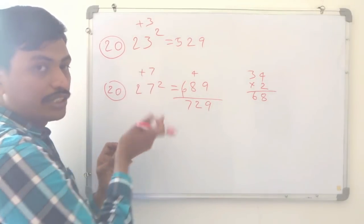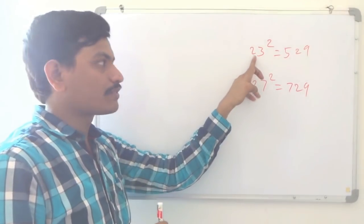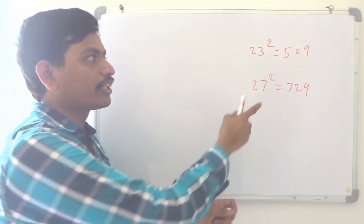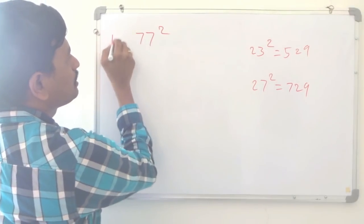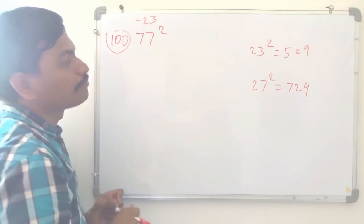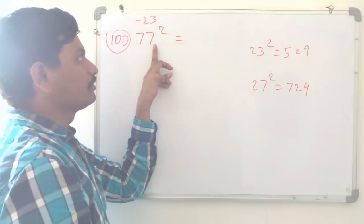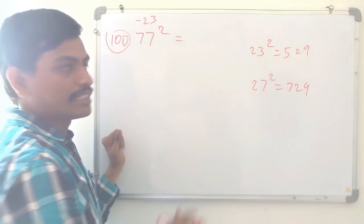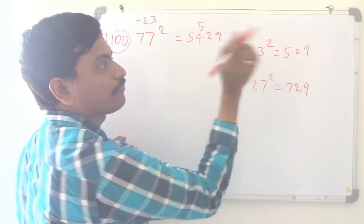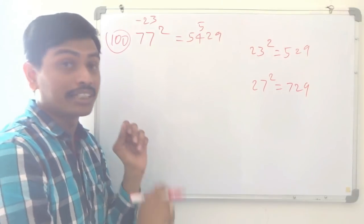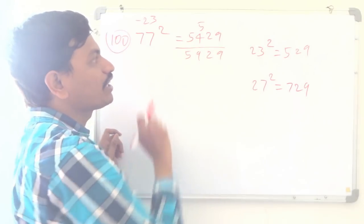If you know the squares from 20 to 30, we can find the squares from 70 to 80 using the nearer-to-100 method. I will take 77 squared, which is nearer to 100. How much lesser? Minus 23. Subtract from 77: 77 minus 20 is 57, minus 3 is 54. And 23 squared is 529. So the answer is 5929 — that is the square of 77.